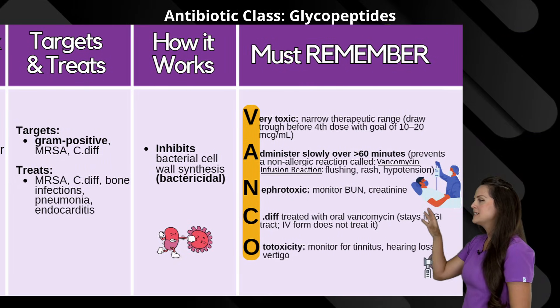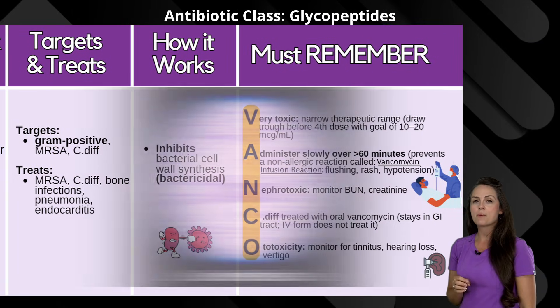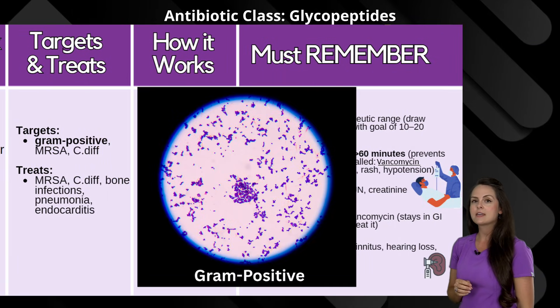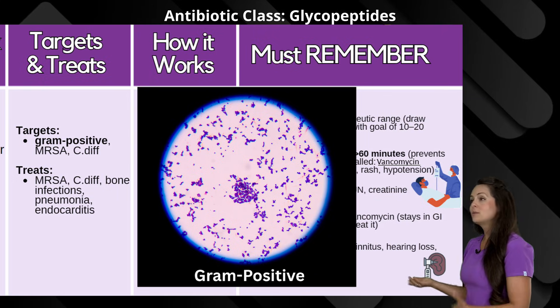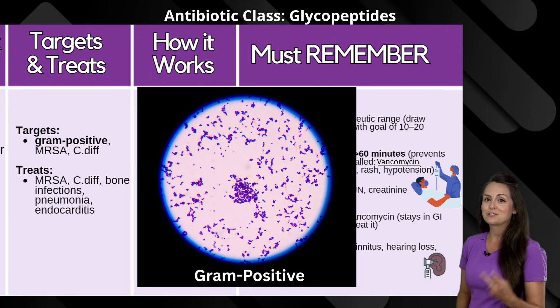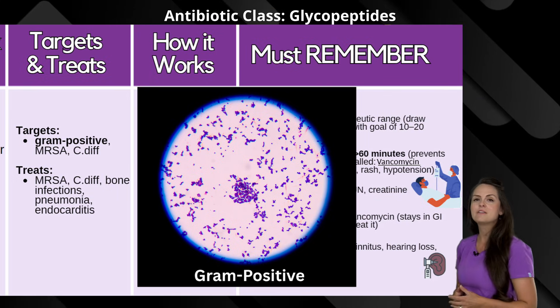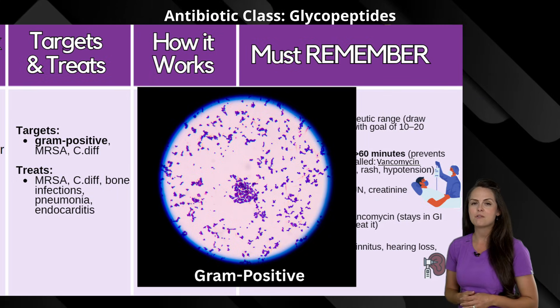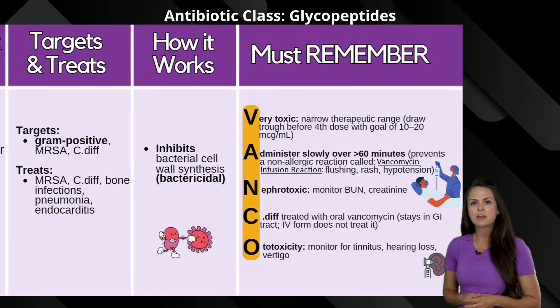Now what does it target? It targets gram positive organisms like MRSA and C. diff. So what's it going to treat? It's going to treat those two, along with bone infections, pneumonia, and endocarditis.